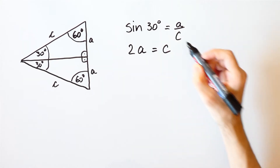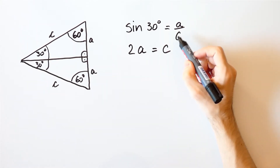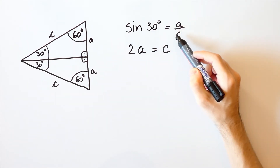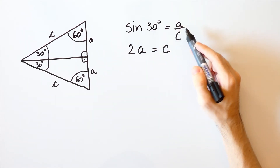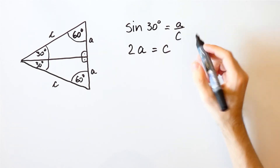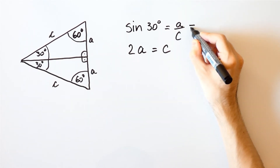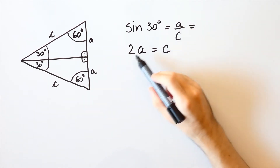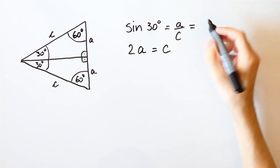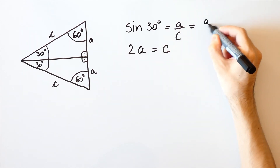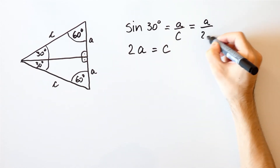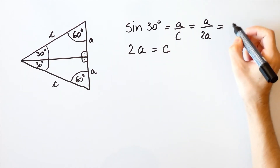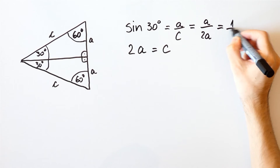But that means that the sine of 30 degrees is equal to a over c, which is now equal to a over 2a, and that is equal to 1 over 2.